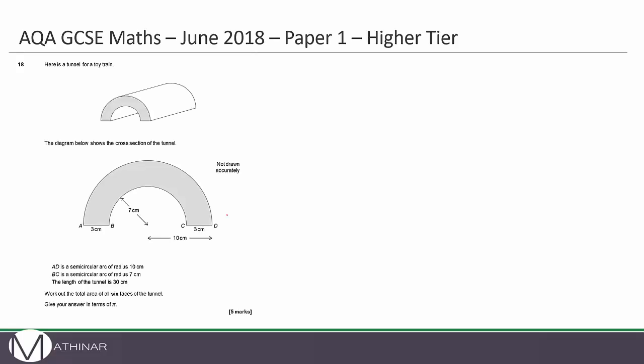Here is a tunnel for a toy train. The diagram shows the cross-section of the tunnel. AD is a semicircular arc with a radius of 10. BC is an arc with a radius of 7. The length of the tunnel is 30 cm. Work out the total area of all six faces of the tunnel.